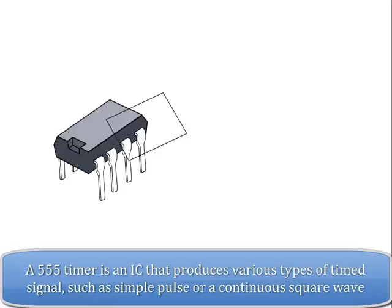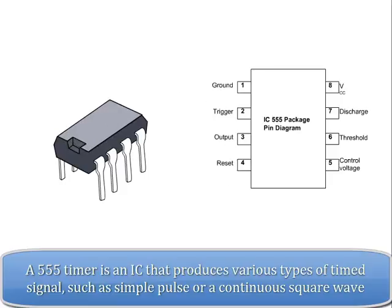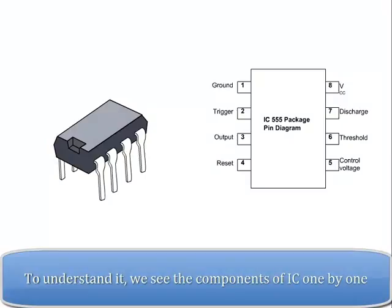Timer IC 555. A 555 timer is an IC that produces various types of time signals, such as a simple pulse or a continuous square wave. To understand it, we see the components of the IC one by one.